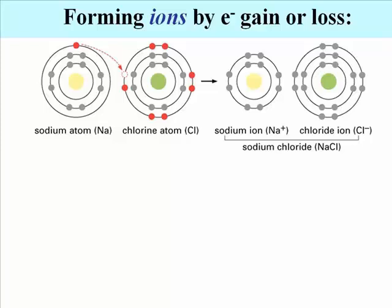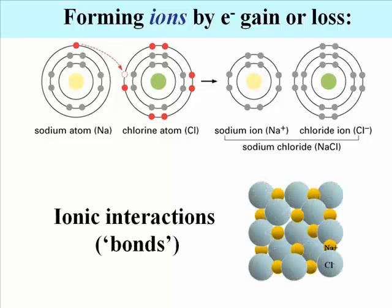formed by the ionization of sodium to Na+, which gives up an electron, and of chlorine to chloride, which accepts an electron. The Na+ and Cl- ions form ionic bonds in a regular array to form salt crystals.